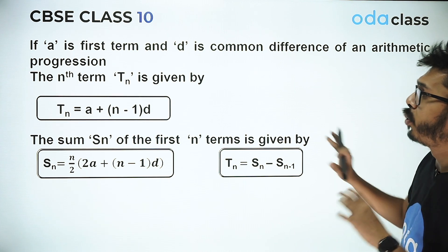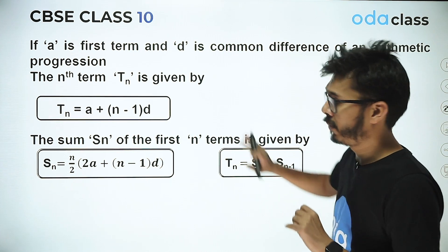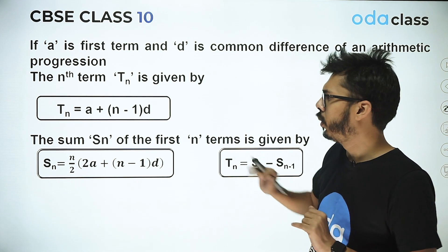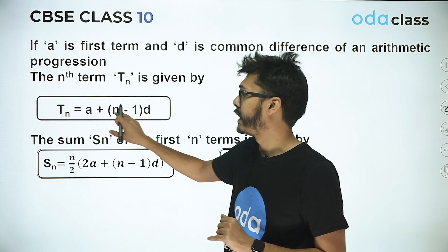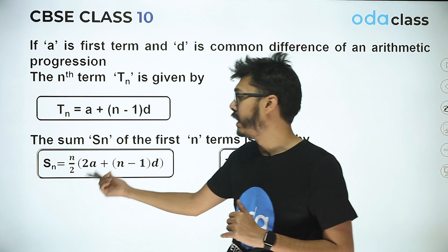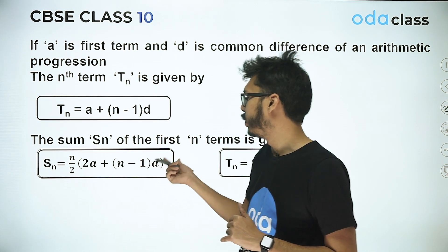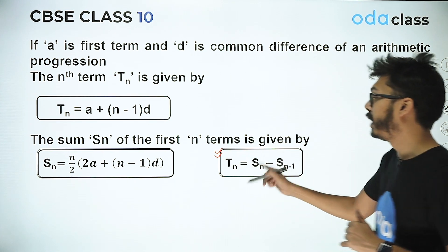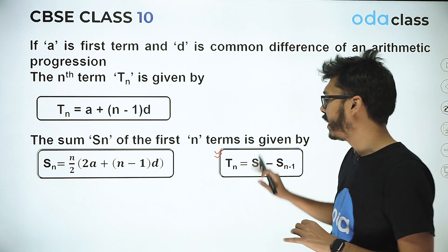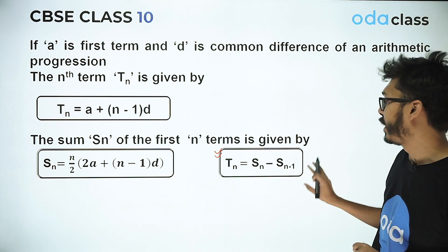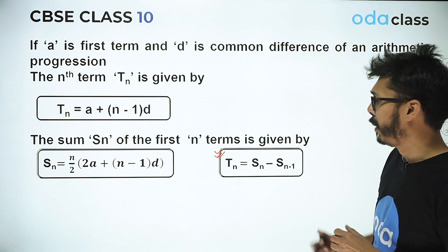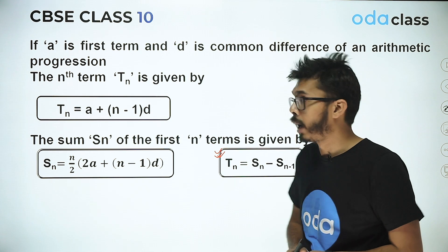Before the first question, let me recall some theory on arithmetic progression. For an AP with first term 'a' and common difference 'd', the nth term is given by tn = a + (n−1)d, and the sum of n terms is Sn = n/2 × [2a + (n−1)d]. There's also another result: the nth term equals Sn minus S(n−1). This result is not in NCERT, so memorize it now.